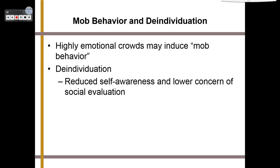This also leads to mob behavior. Highly emotional crowds may induce mob behavior — at political rallies, protest rallies, or sports games where people flip cars and set them on fire. Why? It's part of de-individuation: you have reduced self-awareness and lower concern for social evaluation. Because everyone in the group is doing it, you lose yourself — you are no longer an individual, you are part of the group.